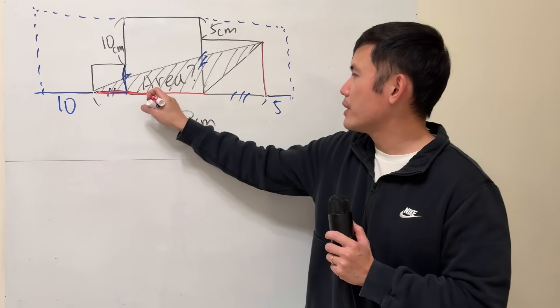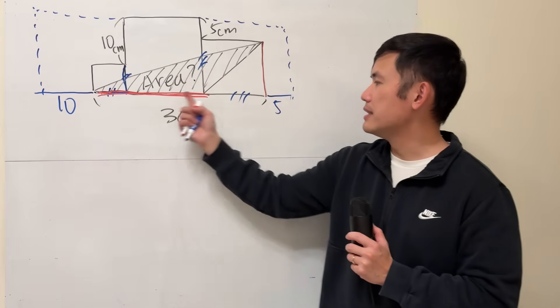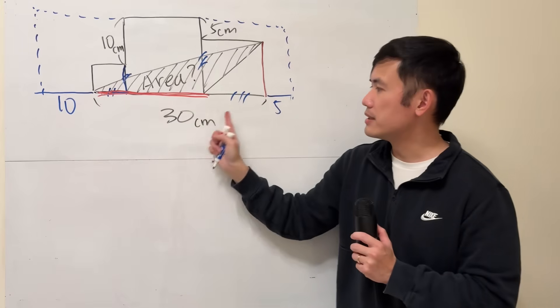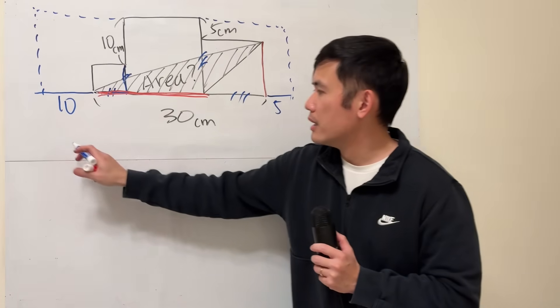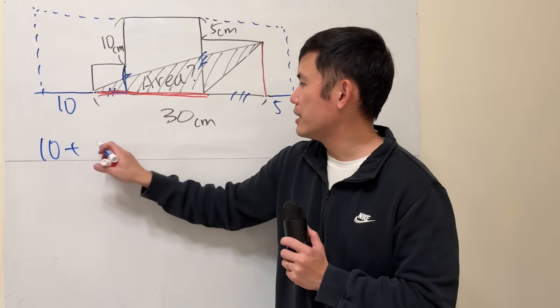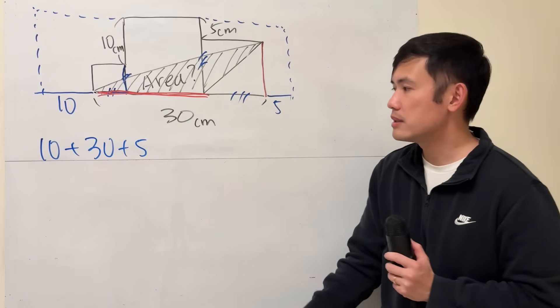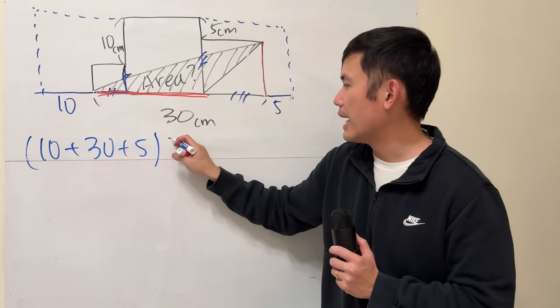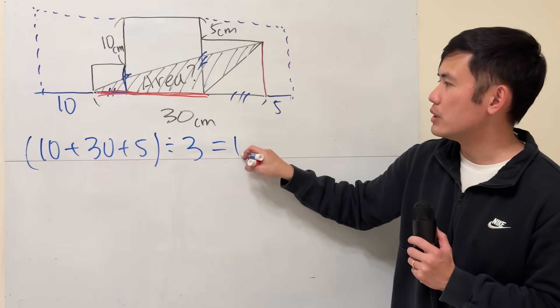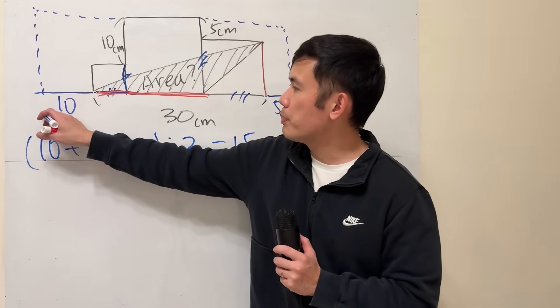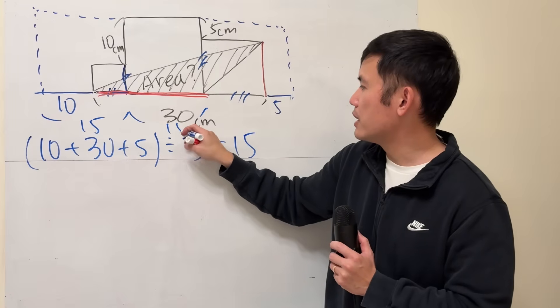Now how are we going to figure out this? This is 10, this is 30 right, from here to here is 30, and this is 5. So all we have to do is 10 plus 30 plus 5 and we have three same size squares. Just go ahead and divide by 3 and that will give us 45 divided by 3 which is 15.